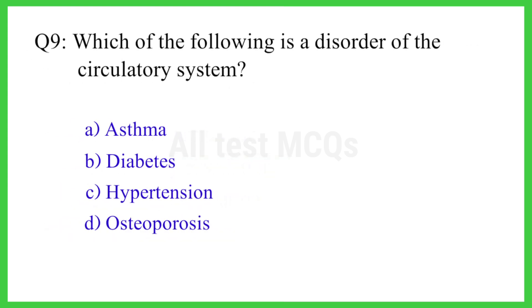Q9. Which of the following is a disorder of the circulatory system? The right answer is option C. Hypertension.